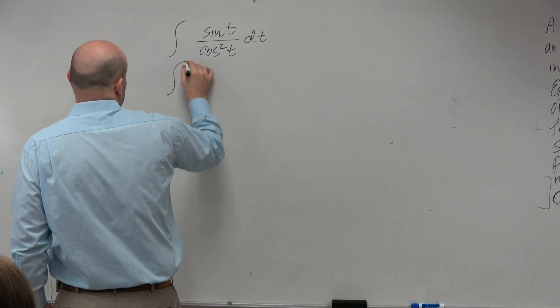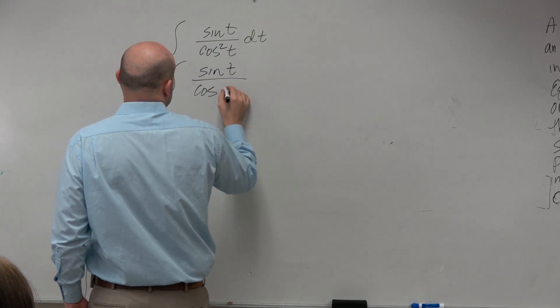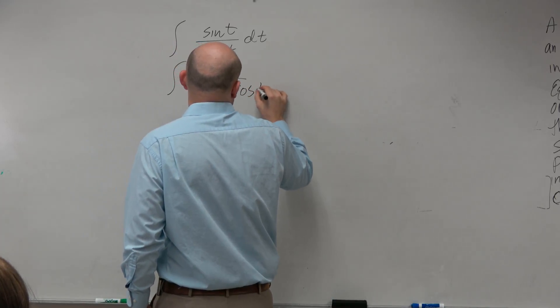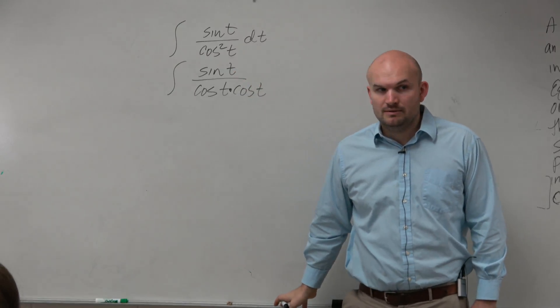So one thing I can do here is let's just break apart this cosine. Remember, cosine squared just means cosine of t times cosine of t.